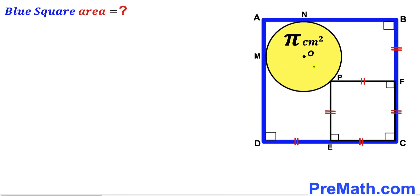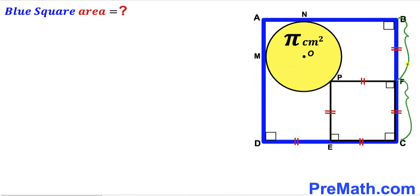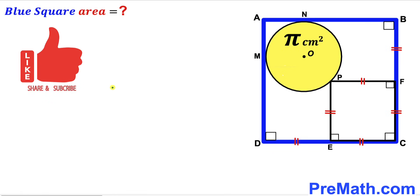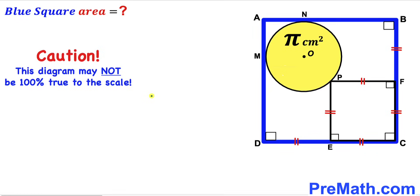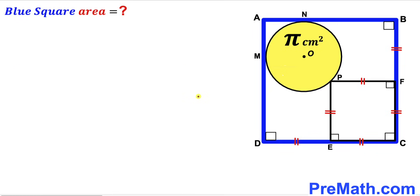Welcome to PreMath. In this video we have a yellow shaded circle with center O and a white square PECF fully inscribed in a big blue square ABCD, as shown in the diagram. The area of the yellow circle is given as π centimeter square. Segment DE equals segment EC, segment FC equals segment BF, and points M and N are the points of tangency. Our task is to calculate the area of the big blue square ABCD.